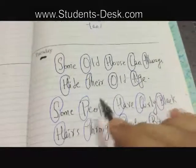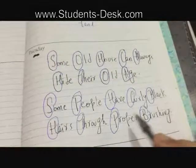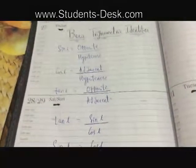If you cannot remember this word, then you can remember this word: Some people have curly black hairs through proper brushing. So, this is the basic trigonometric identities. Thank you very much for watching that video.